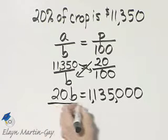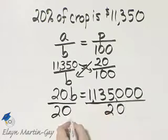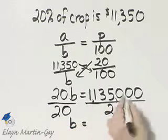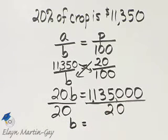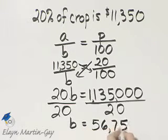To solve for B, I'll divide both sides by the coefficient of B, which is 20. And then B will be, and you need to go off to the side and divide. And if you do so, you'll have 56,750.